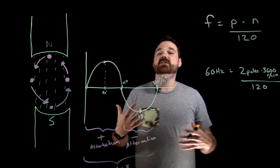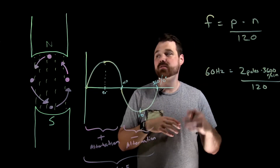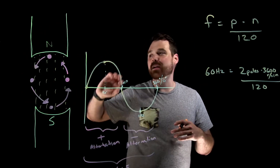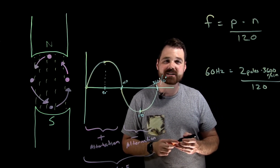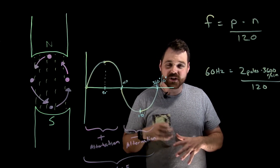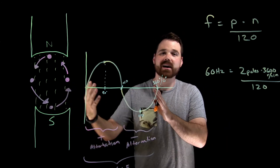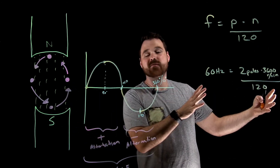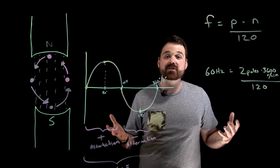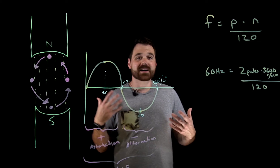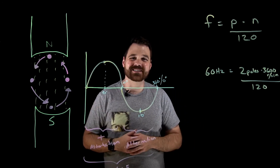In order to generate a frequency of 60 hertz, we might consider adding more poles into this situation, or we're going to need to spin that generator really fast. So that's a quick overview of generating an AC sine wave and how that ties into our frequency. It's a really big topic and we could talk a lot more about it, but thank you very much for watching. Check out some other videos and have a great day.